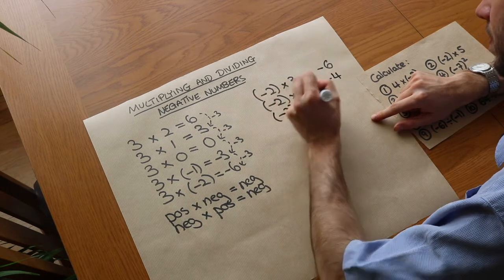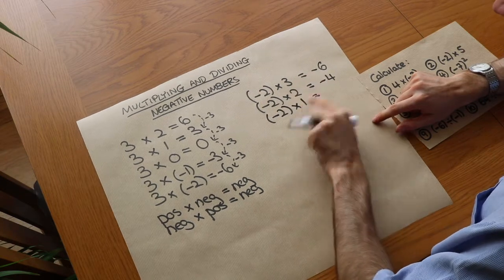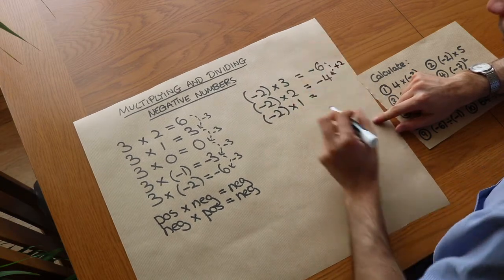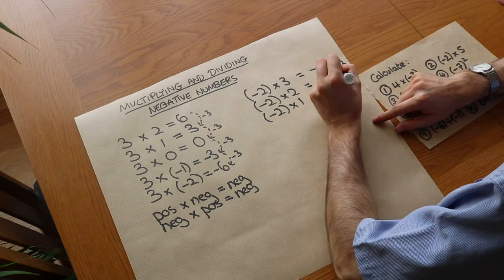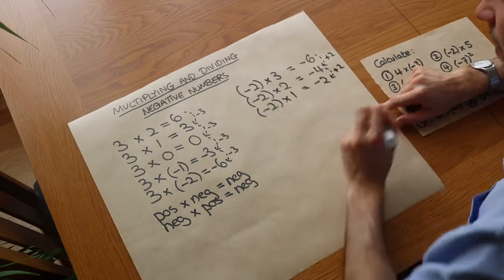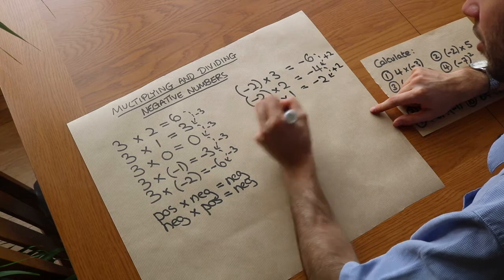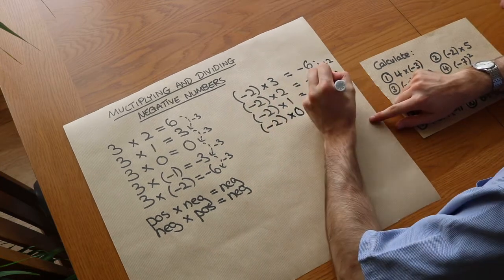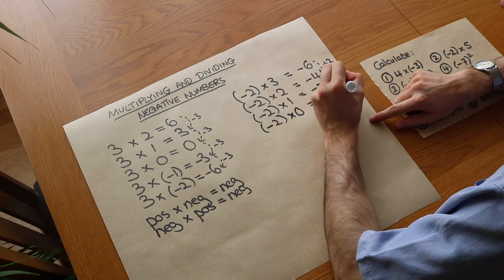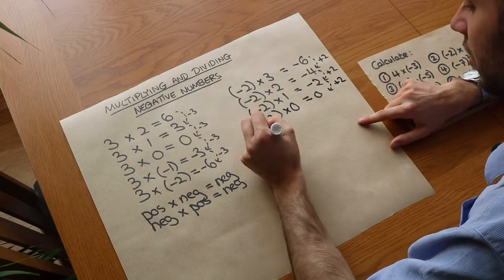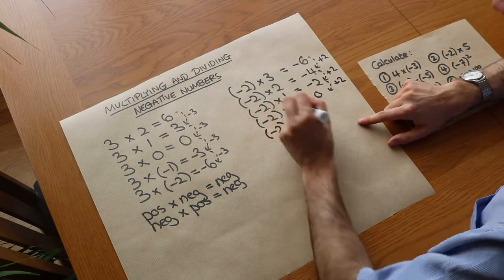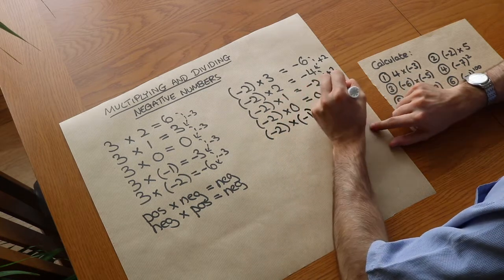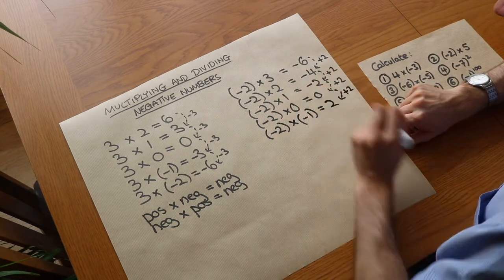Let's keep going down, reducing by 1. We can see this is increasing by 2 each time. We know minus 2 times 1 is minus 2, and that's increasing by 2. What about minus 2 times 0? Well, anything times 0 is 0 — and look, that's increasing by 2 again. So continuing the pattern, we'd next have minus 2 times negative 1, and if it's going up by 2, then we must have 2.